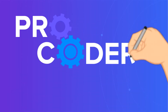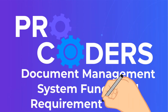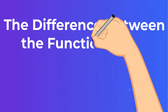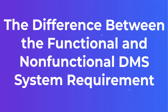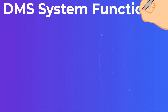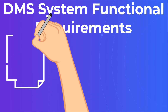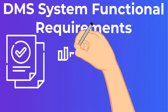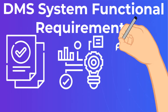Document Management System Functional Requirements Part 2, by ProCoders. The difference between functional and non-functional DMS system requirements. Document Management System Functional Requirements specify the most important features of a system, without which the system would fail to accomplish its set purpose.